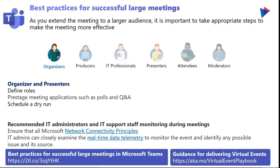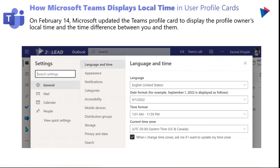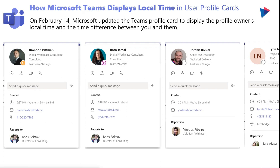Also included is guidance for delivering virtual events — there is a virtual event playbook I'd highly encourage you to check out if you're hosting large meetings. Microsoft is now also displaying local time in user profile cards. As long as you've set up and configured your region and time zone in Outlook, your employees will be able to display the profile owner's local time and the time difference between you and them — whether someone is three or six hours behind or in the same time zone.